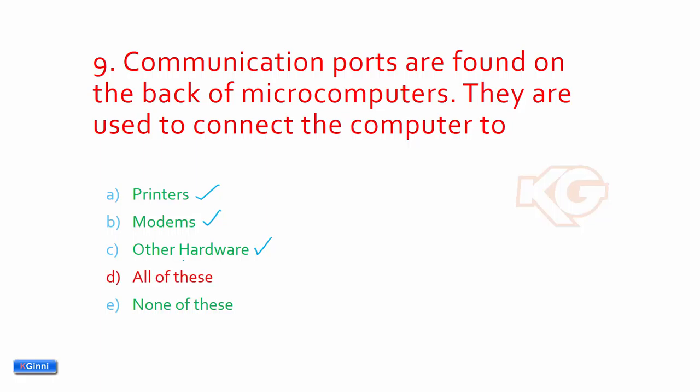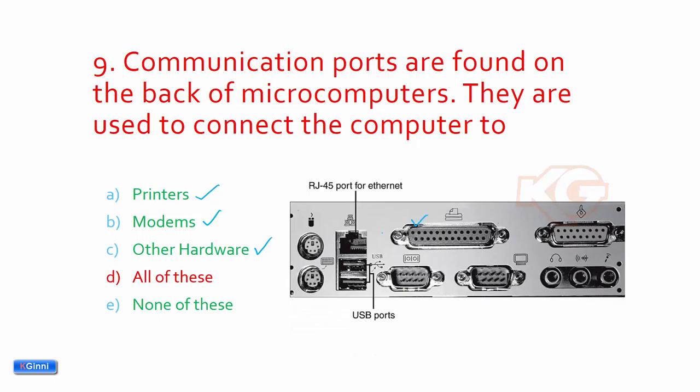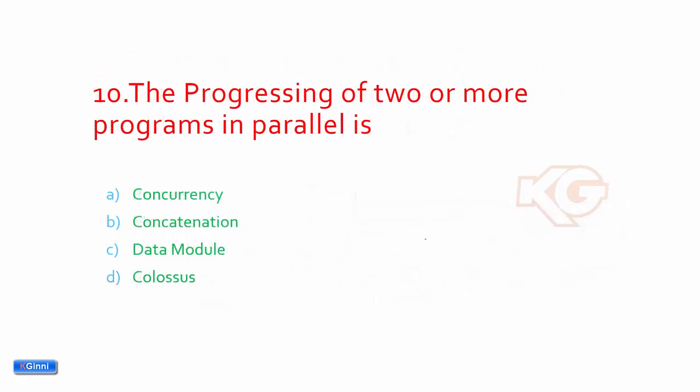You can also see pictorially the different types of ports that your computer has. This is for USB for the mouse and USB for external devices that you can access. These are audio jacks to the monitor. Here is missing some of the HDMI ports and other stuff, but for this information, printers, modems, and other hardware - all of these is the answer.